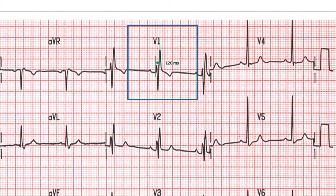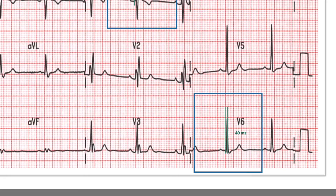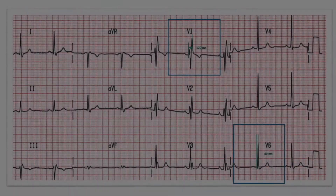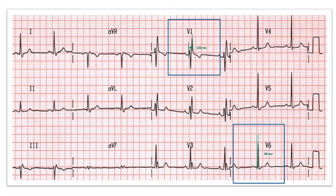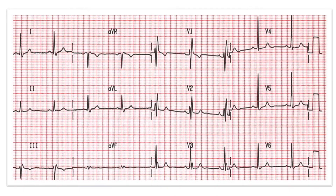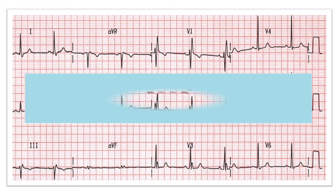In lead V1, the R wave peak time is greater than 50 milliseconds. In leads V5 and V6, there is a normal R wave peak time. T wave changes are also present — the T wave is inverted in lead V1 and positive in V5 and V6. After fulfilling all the criteria of right bundle branch block, we can now confidently say that this patient has right bundle branch block in his ECG.